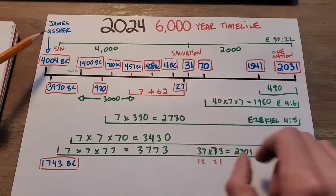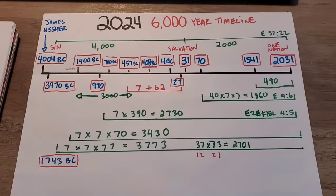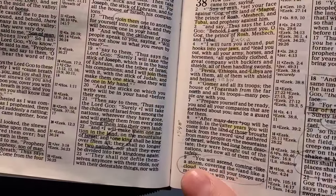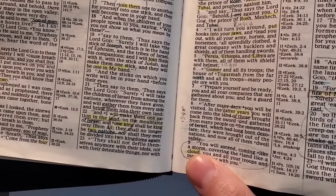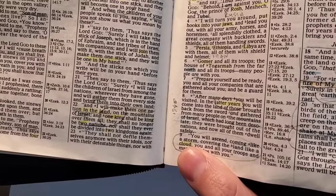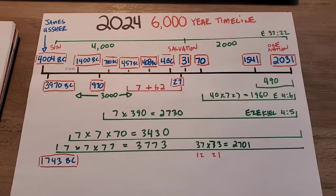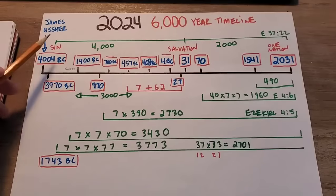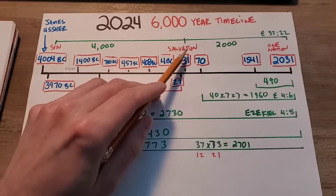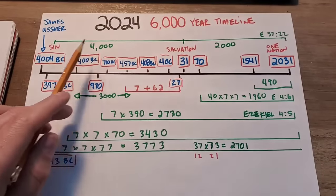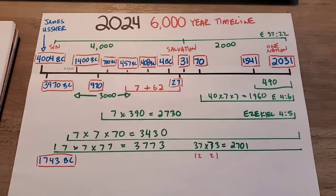And from salvation to one nation, if you go to Ezekiel 37, verse 22, it says here specifically, I will make them one nation in the land on the mountains of Israel. So he's talking about no more two tribes, no more Jew and Gentile, but one nation. And so I believe by faith that from the sin event to the cross was 4,000 years, and also from salvation to one nation under Jesus Christ will be 2,000 years. So from sin to salvation to one nation, we've got a 6,000 year plan. And then we've got the millennial kingdom, which is 1,000 years after that second coming.